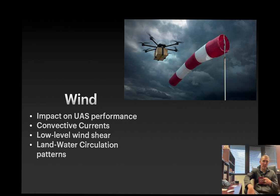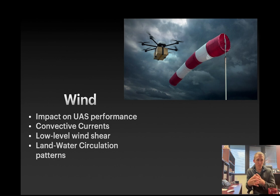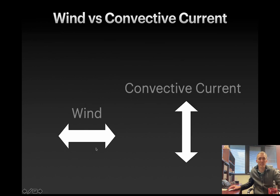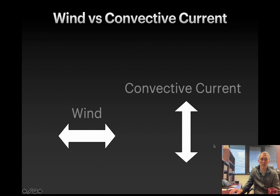Wind is obviously going to have an impact on your UAV performance. There are really two kinds of wind. The movement of air around on the surface of the Earth is going to result in wind, and wind is going to be horizontal, parallel to the surface of the Earth. We've also got what are called convective currents, and those are going to be vertical motion of air.